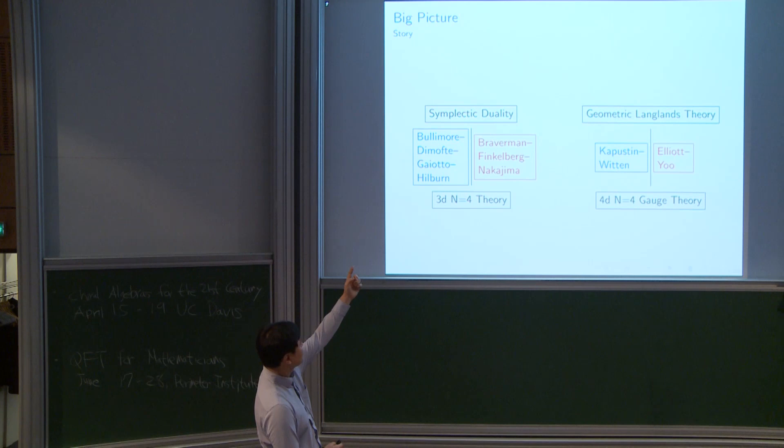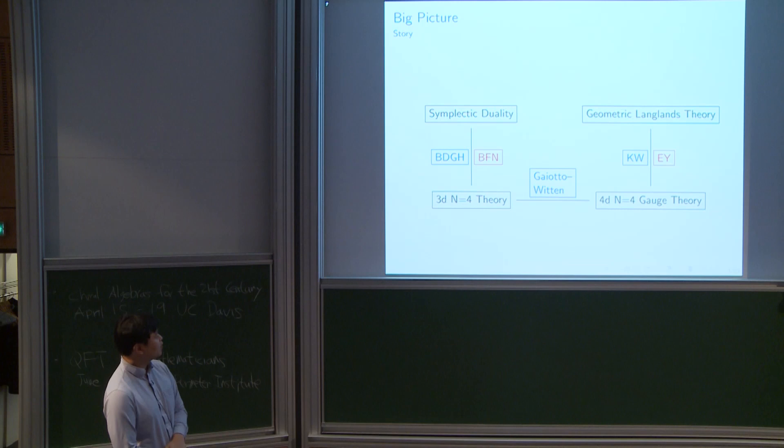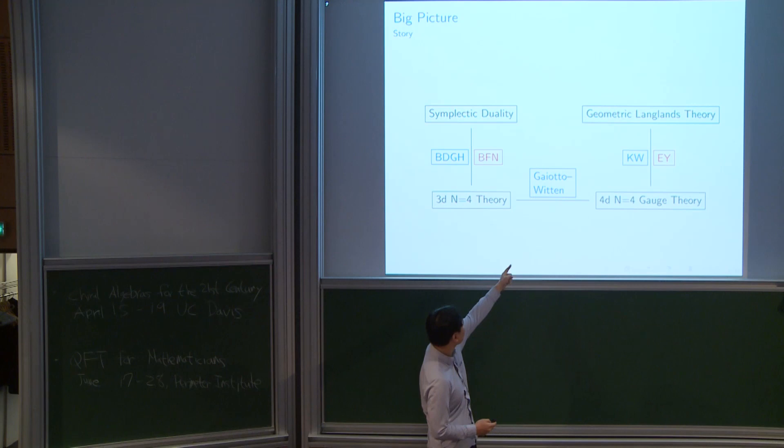The second idea is to relate symplectic duality with the Langlands program by relating the relevant physical theories. Having related these two physical subjects, the natural idea is that as a corollary we get some relation between the two mathematical subjects.